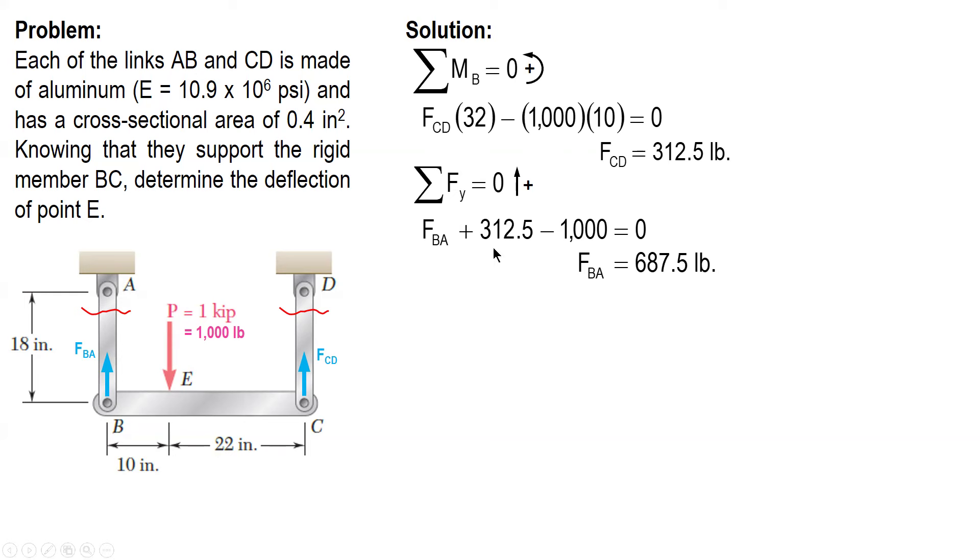Now, since the forces are known, and if we compare the two links, same material, same value of E, and same cross-sectional area, same length also. So since BA is bigger than CD, it means the displacement at point B is larger compared to C.